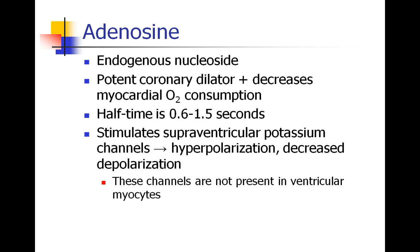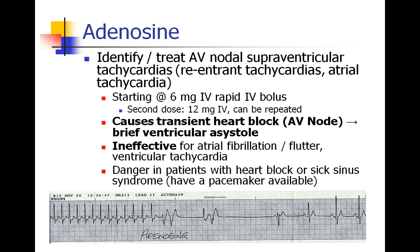This all happens in the supraventricular portion of the heart. Adenosine is mostly used to identify and treat AV nodal supraventricular tachycardias — re-entrant tachycardias, atrial tachycardias. If a patient has classic SVT or AV nodal re-entrant tachycardia, we can treat it with adenosine. You give a 6 milligram rapid IV bolus — it needs to be rapid because its half-life is only a second, and you need it to reach the heart before it's metabolized.